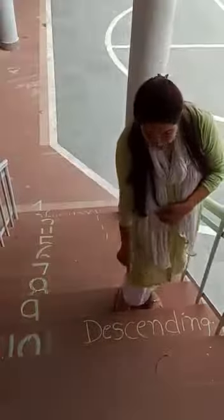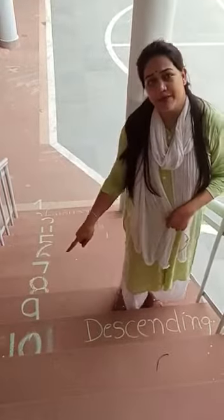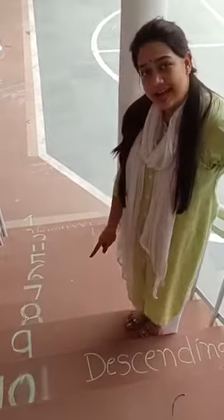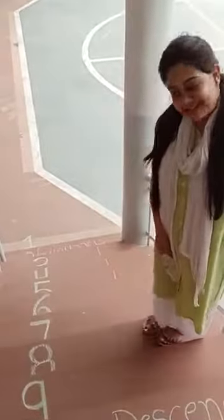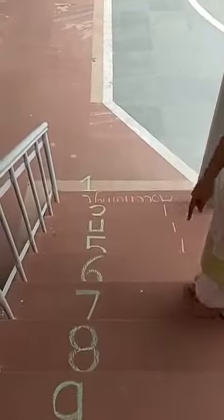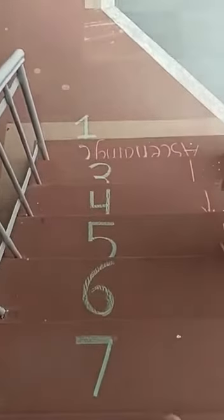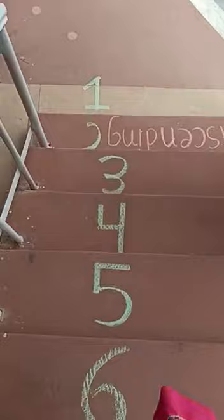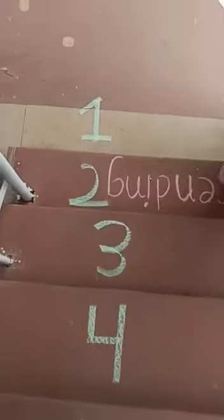Now we are doing descending. We are going from the bigger number to the smaller number, from 10. I am coming on 9, after 9 coming on 8, after 8 coming on 7, 6, 5, 4, 3, 2, and 1.